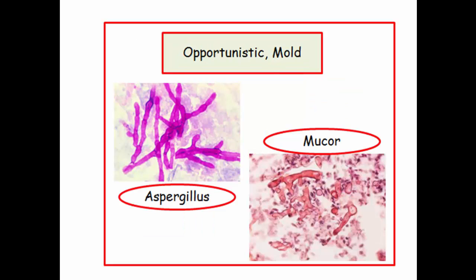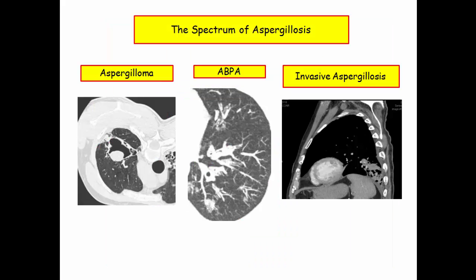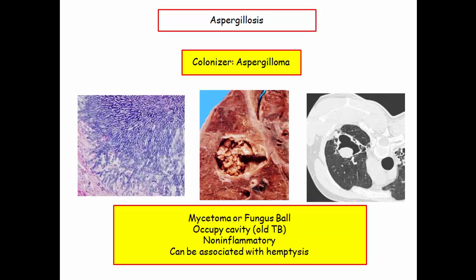Those are the opportunistic yeasts. Let's finish up with the opportunistic molds, which include aspergillus and mucor species — you are guaranteed to see a couple of questions on these. We'll start with aspergillus. Although there is a spectrum of infection with aspergillus, only invasive aspergillus represents opportunistic infection. Aspergilloma reflects colonization, whereas allergic bronchopulmonary aspergillosis represents a hypersensitivity response. One quick slide on the aspergilloma, or fungus ball.